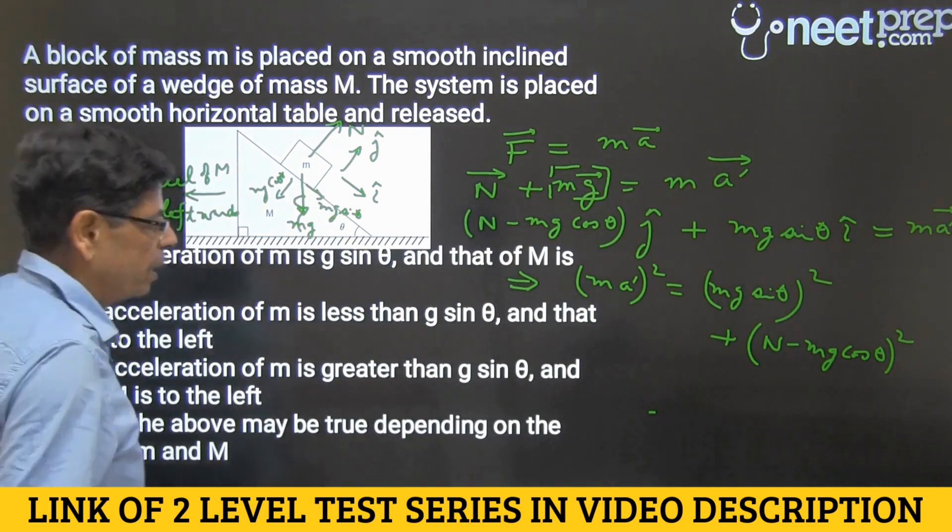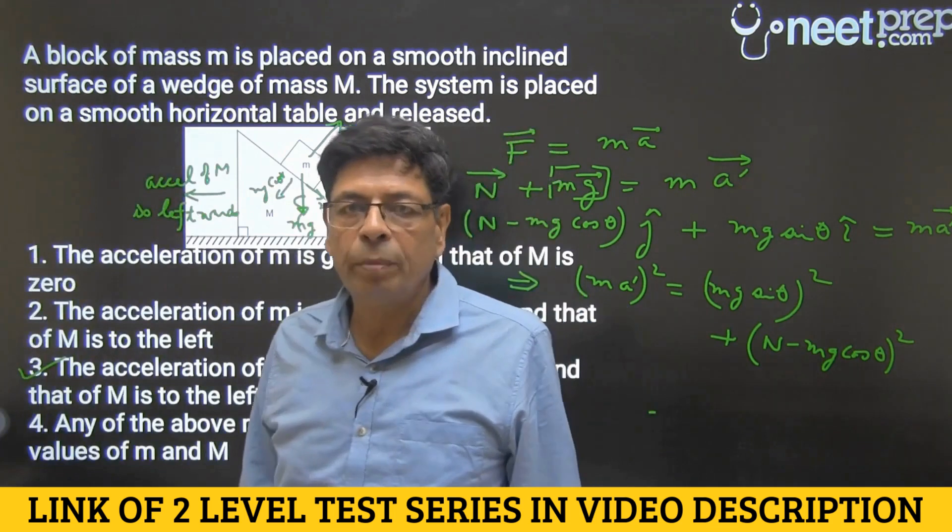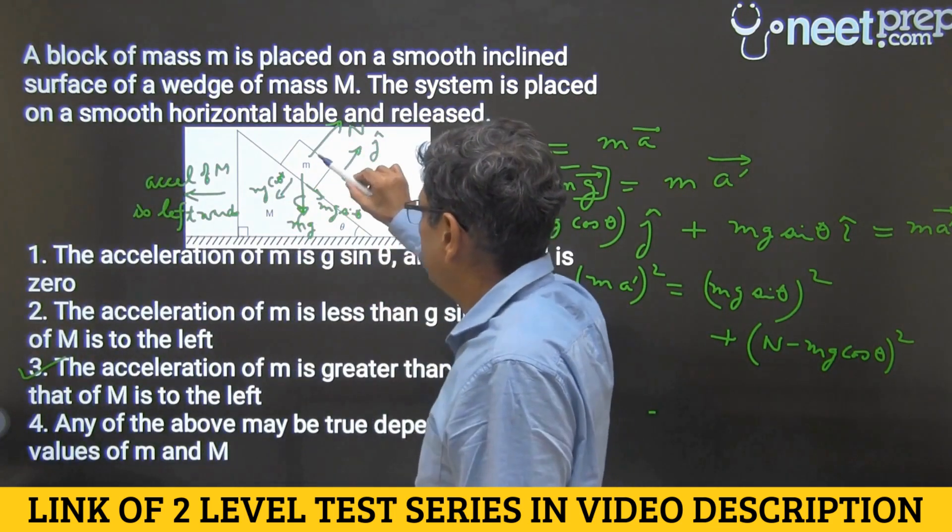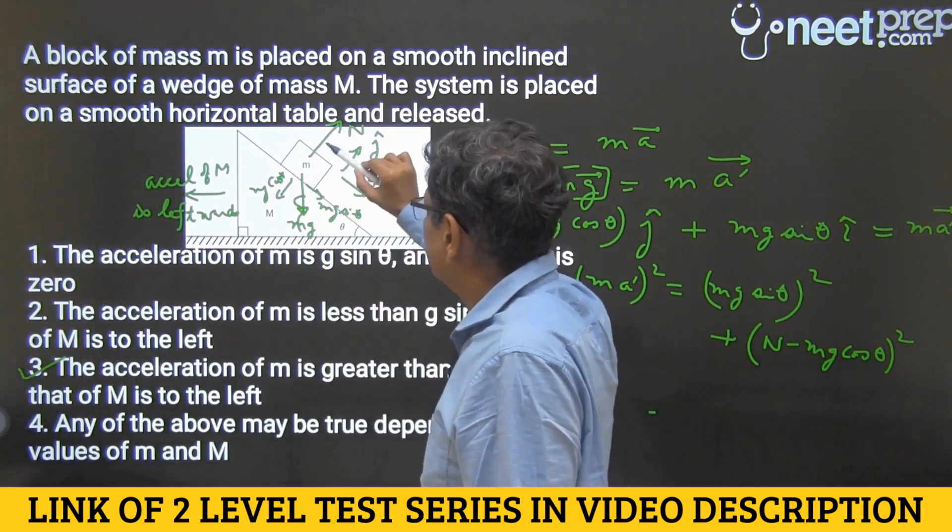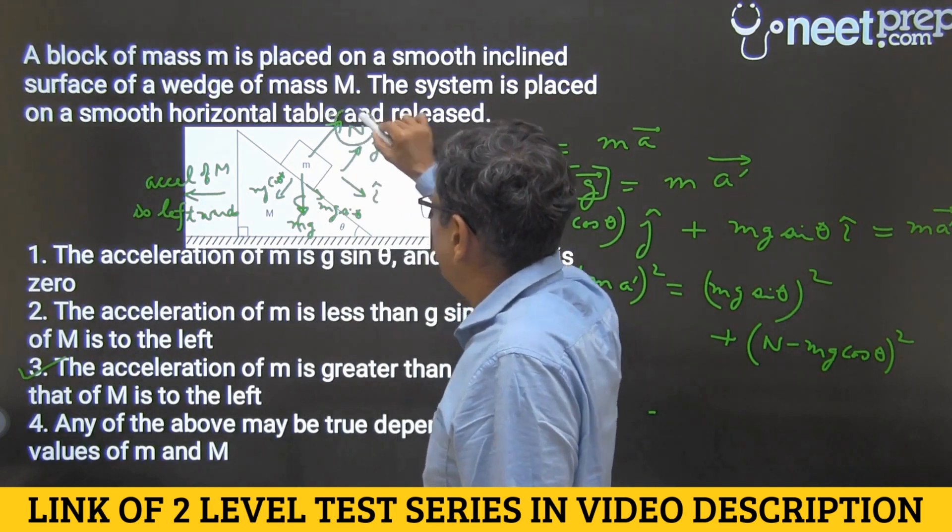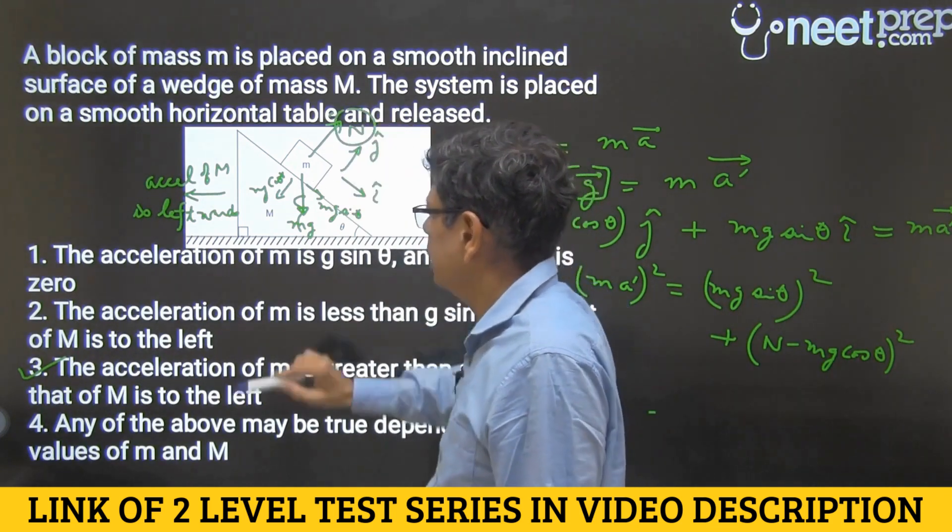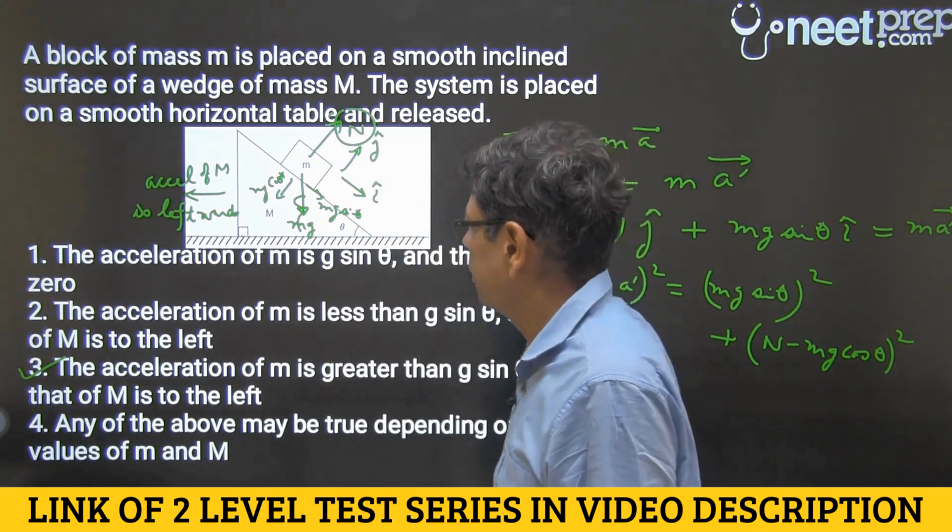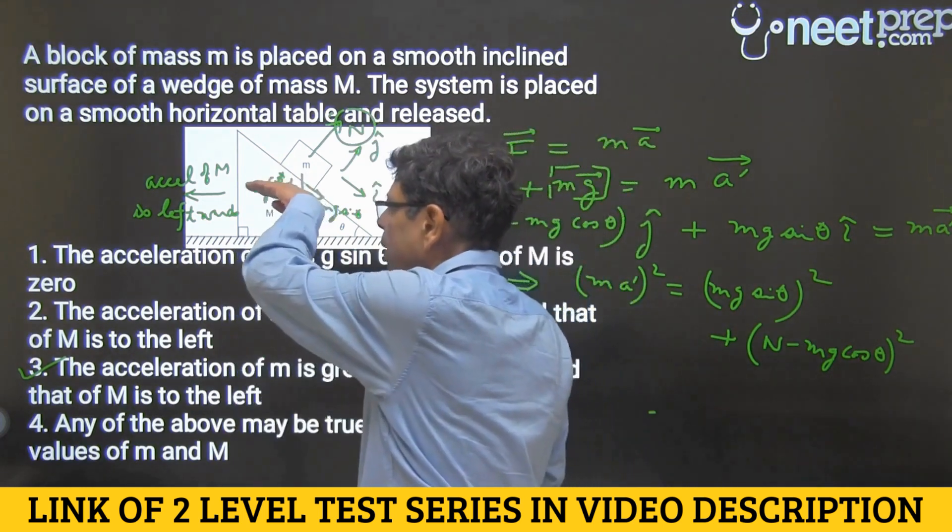option three is the answer. And now the only one thing that needs to be understood is why the normal reaction here would be less than mg cos theta. It would be less than mg cos theta because after all capital M is...